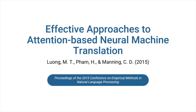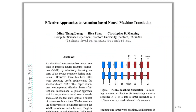Hello there. In this video, I'd like to present the key ideas of Luang, Bam, and Manning's paper, Effective Approaches to Attention-Based Neural Machine Translation. This paper is one of the most important papers in the field of neural machine translation and in deep learning in general. The central idea of this paper is the implementation of a new kind of attention, local attention, which is computationally more efficient and also has better performance than the previous ways of applying attention.